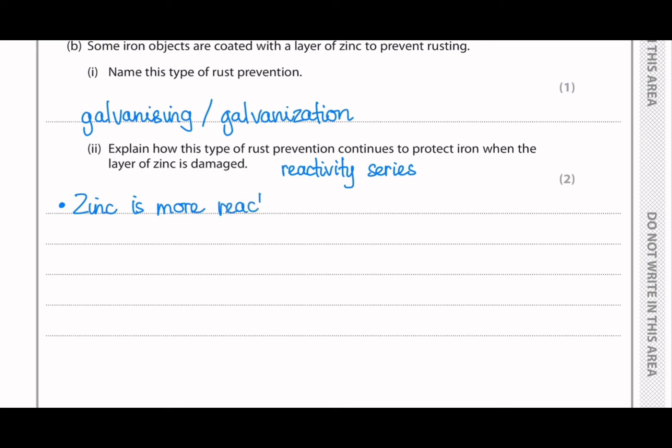So the first reason is that zinc is more reactive. And because it is more reactive, it reacts with oxygen and water first. So then to prevent iron from reacting, the second bullet point we can write is that zinc reacts before iron.